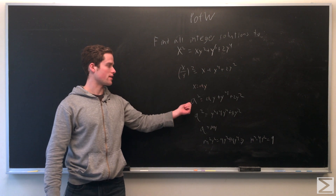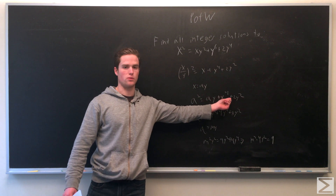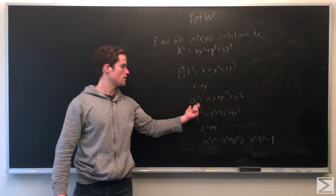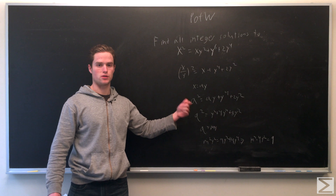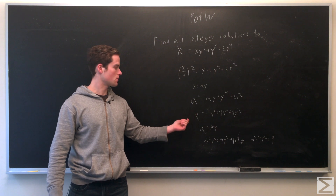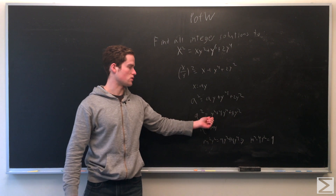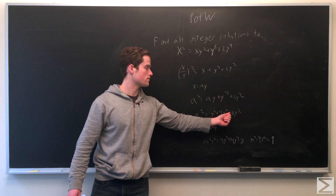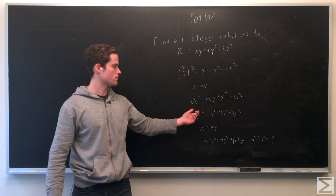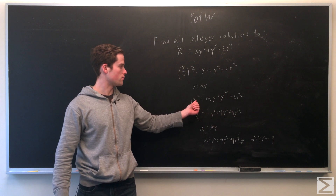Plugging that in, we get a squared equals a times y plus y to the fourth plus 2y squared. This is a quadratic in a, so the discriminant must be a perfect square. So we have q squared equals y squared plus 4y to the fourth plus 8y squared — that is b squared minus 4ac.